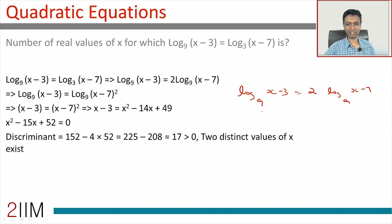This tells us (x - 3) = (x - 7)², since 2 times log of (x - 7) is nothing but log of (x - 7)². We simplify this: x - 3 = x² - 14x + 49, or x² - 15x + 52 = 0.